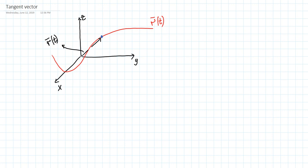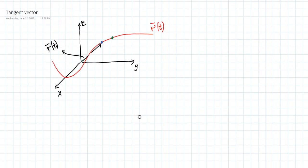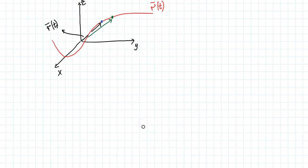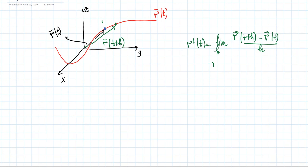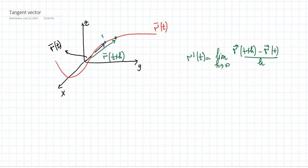In order to define the differentiation, we need to define another point closer to this point. This vector is going to be R of t plus h. So the derivative of R with respect to t, at some point t, is the limit of R(t+h) minus R(t), divided by h, where h goes to 0.